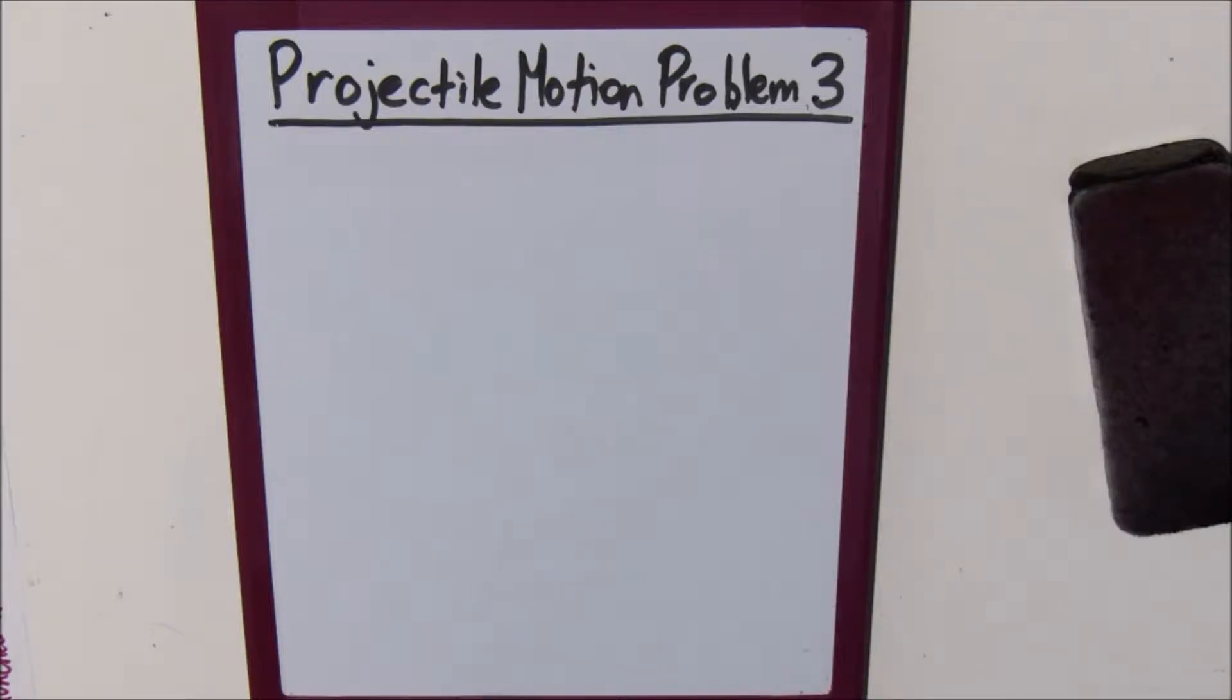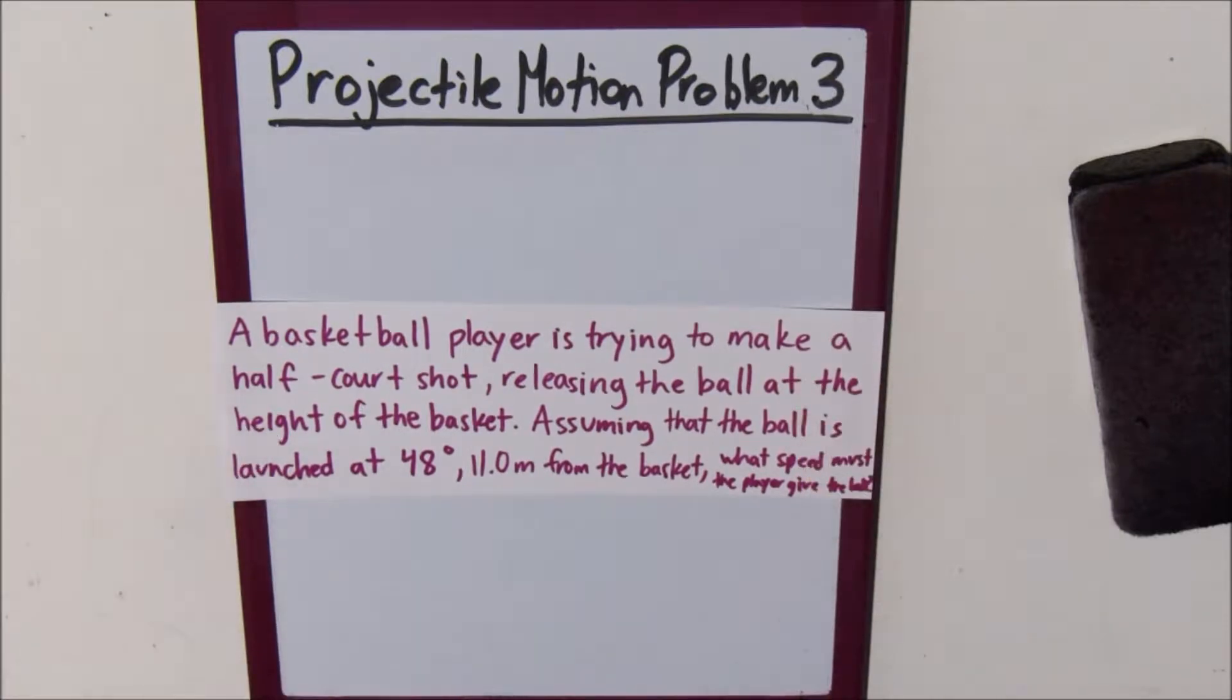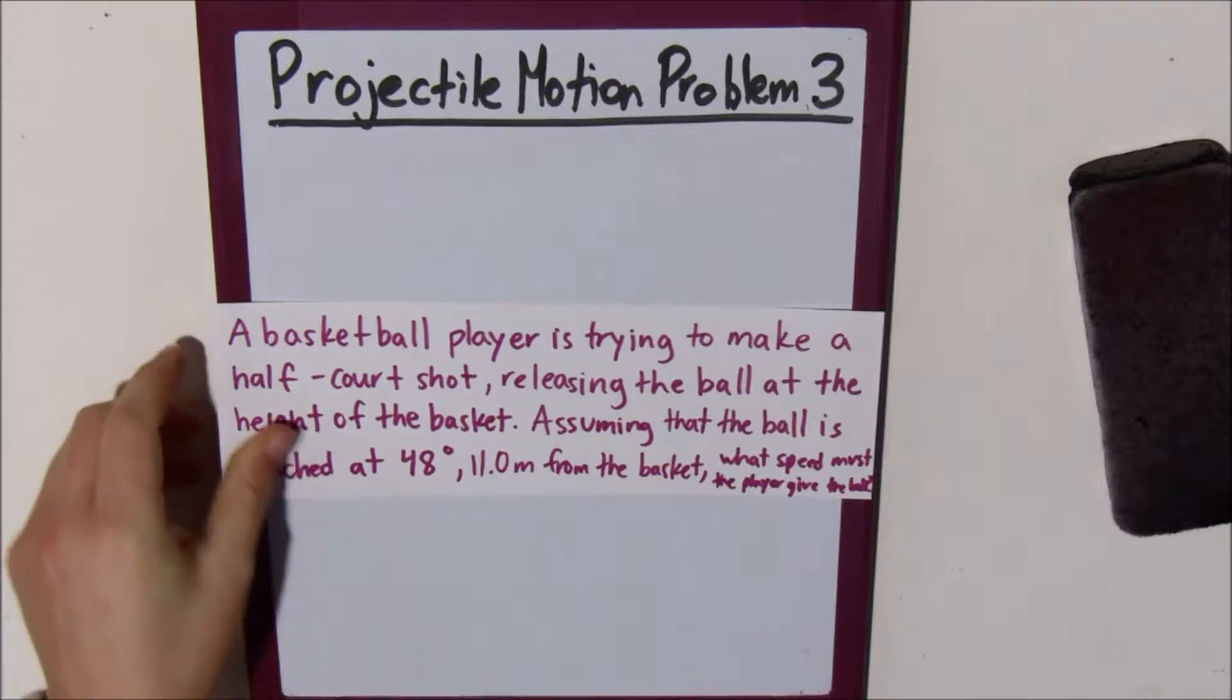Alright, so now we have another projectile motion problem. The problem is, a basketball player is trying to make a half-court shot, releasing the ball at the height of the basket. Assuming that the ball is launched at 48 degrees, 11 meters from the basket, what speed must the player give the ball?